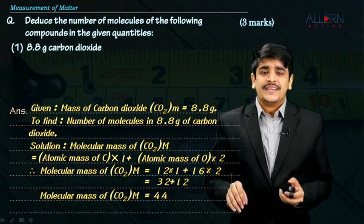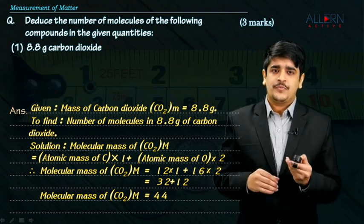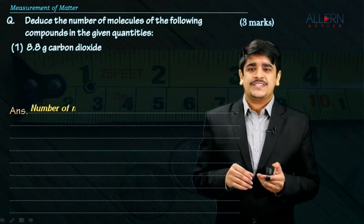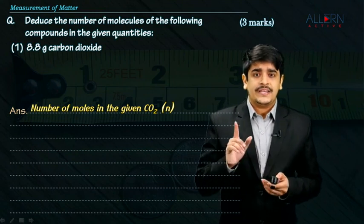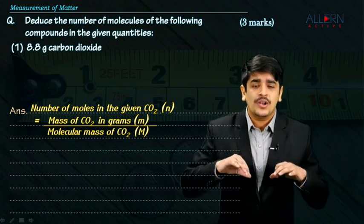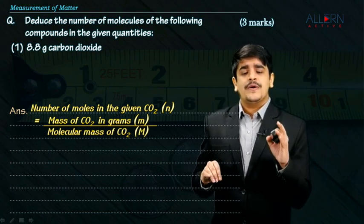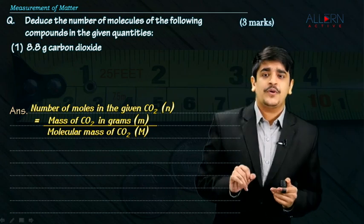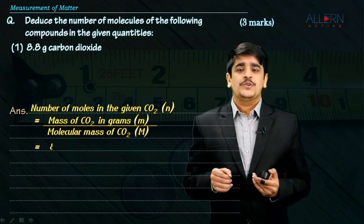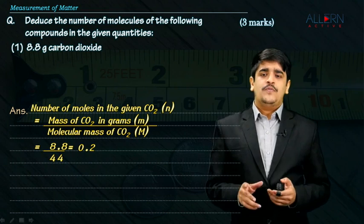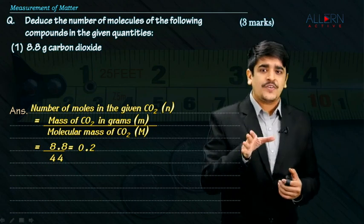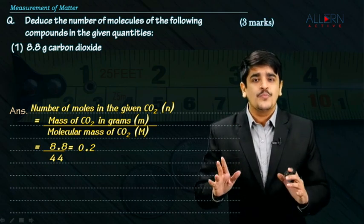Using that information, I can calculate the number of moles of carbon dioxide. The number of moles of carbon dioxide equals the mass of carbon dioxide in grams divided by the molecular mass of carbon dioxide. The mass given is 8.8 grams and the molecular mass is 44. So 8.8 divided by 44 gives 0.2 — meaning 8.8 grams of carbon dioxide contains 0.2 moles of carbon dioxide.